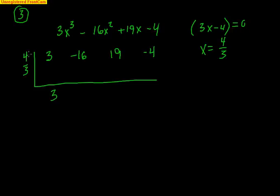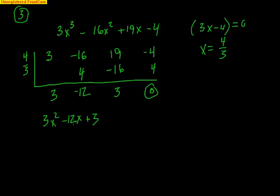Drop down to 3, 4 thirds times 3 is 4. Negative 16 and 4, maybe you need a calculator for that. If you do, go right ahead, don't be afraid to take your time and get that right, it would be negative 12. And again, negative 12 times 4 thirds would be negative 16. Add that together, I get a 3, I get a 4, I get a 0. So that means I'm left with 3x squared minus 12x plus 3. You can go ahead and use the quadratic formula to find the other zeros from this. Or if you need to, go ahead and factor out a 3. It'll probably make your life a little bit easier.